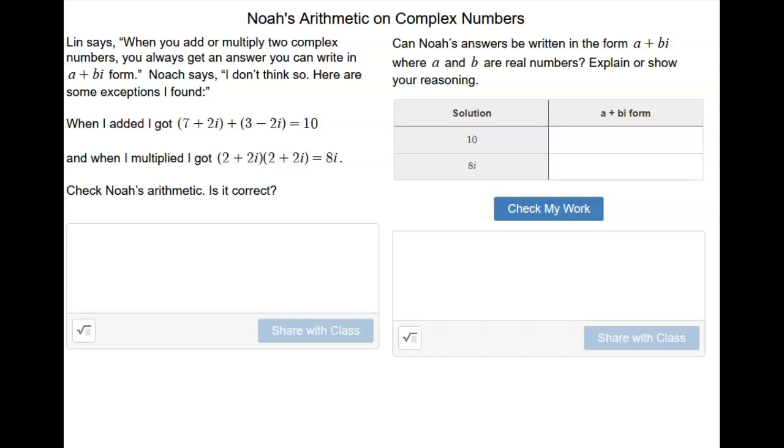So we want to check his arithmetic and see if he's correct. And then if he is correct, we want to take those answers and write them as complex numbers. We want to write them in a plus bi form. So let's just check to see if his arithmetic is correct.